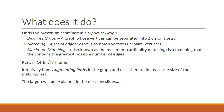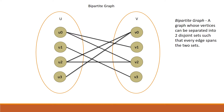The Hopcroft-Karp algorithm runs in O(E√V) time, where E is the set of edges and V is the set of vertices. It works by iteratively finding augmenting paths and using them to increase the size of the matching set. We'll explain some of these terms in the next few slides.